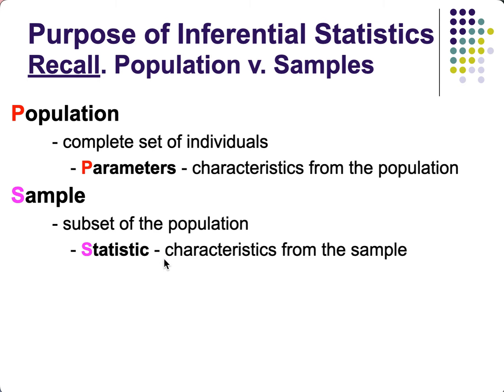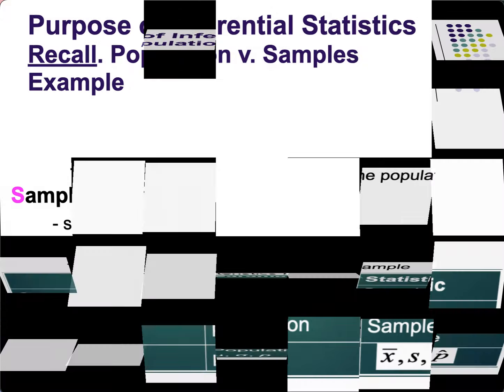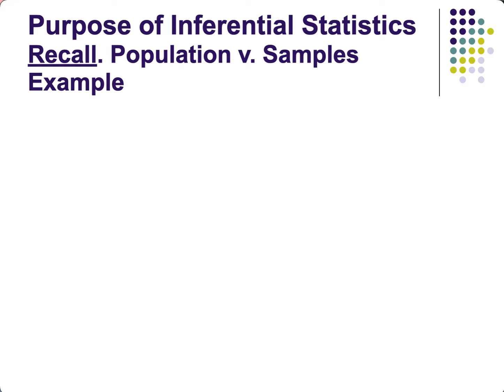Examples of statistics include sample means, sample medians, and sample variances. One thing to note is that parameters are mostly represented by Greek letters, while statistics are mostly from the English alphabet.